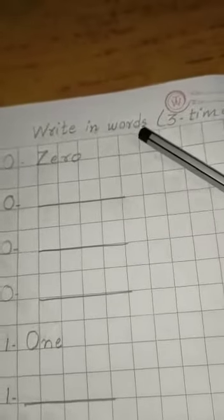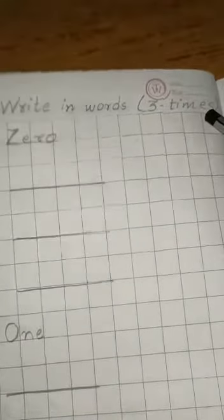First, write down the question. Write in words three times. You have to write each spelling three times.